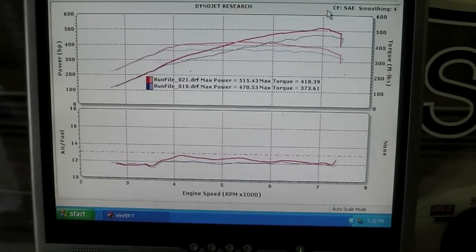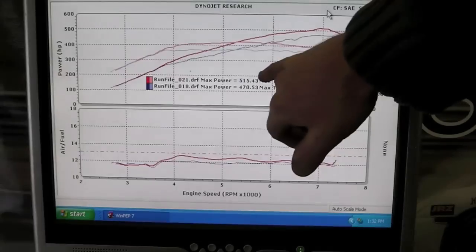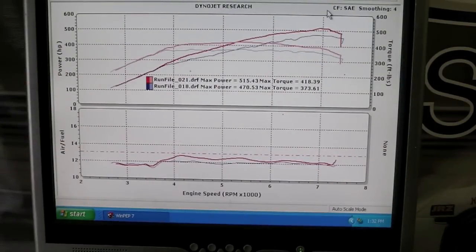I believe that is going to translate close to 520, 530 horsepower, something like that. And 515, that's roughly 600 horsepower to the tire, so that's pretty significant.